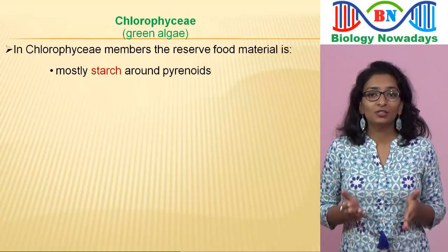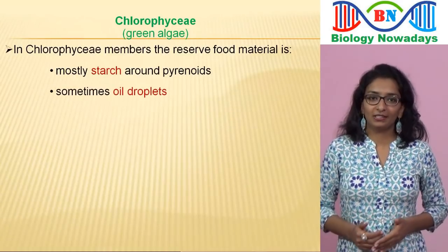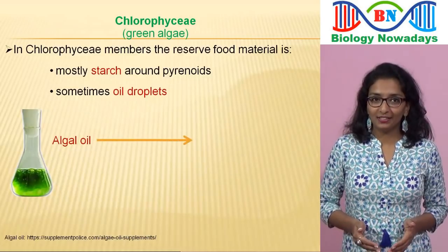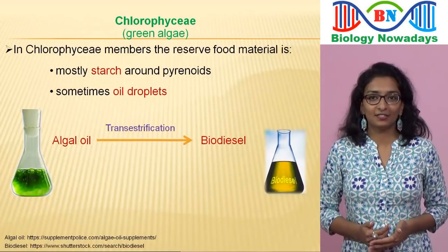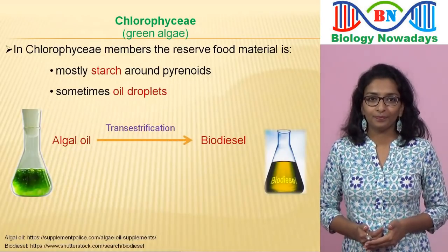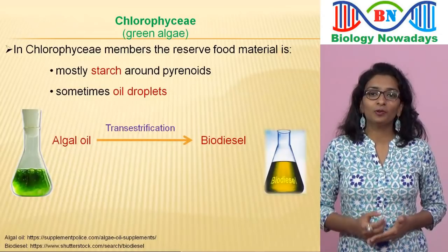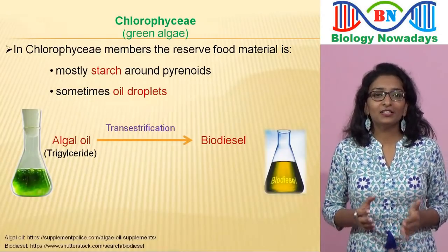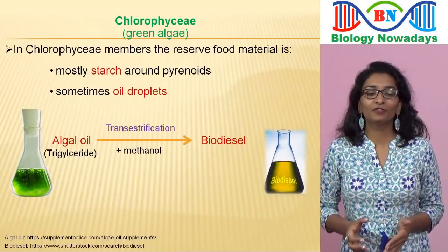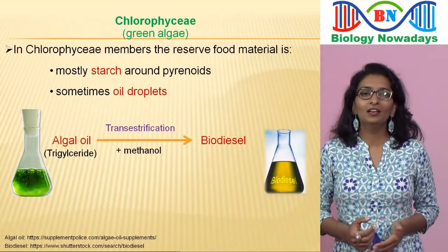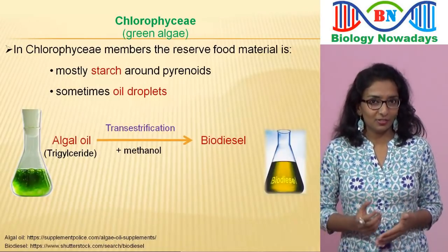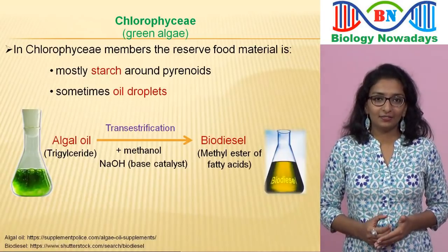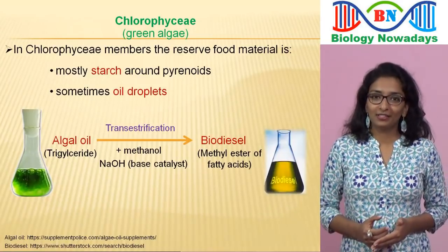Some algae may store food in the form of oil droplets. This oil can be converted into biodiesel through a process called transesterification. In this process, the oil — which is a triglyceride — is treated with methanol in the presence of a base catalyst, for example sodium hydroxide, to obtain methyl ester or fatty acid, which is called the biodiesel.